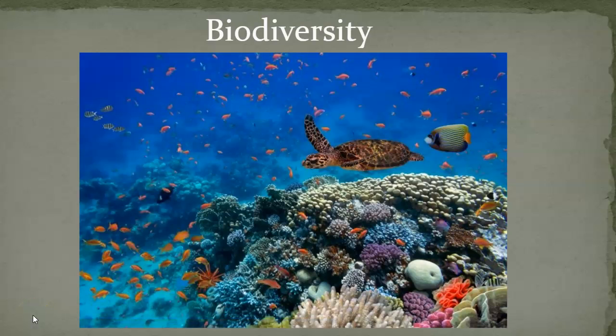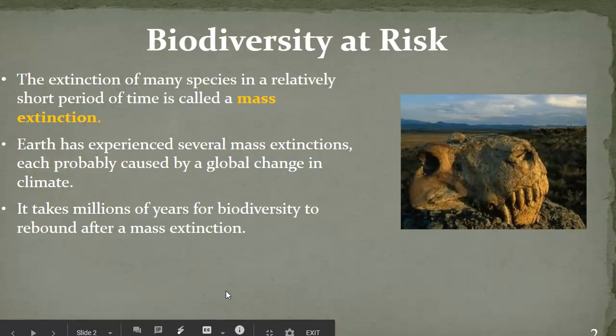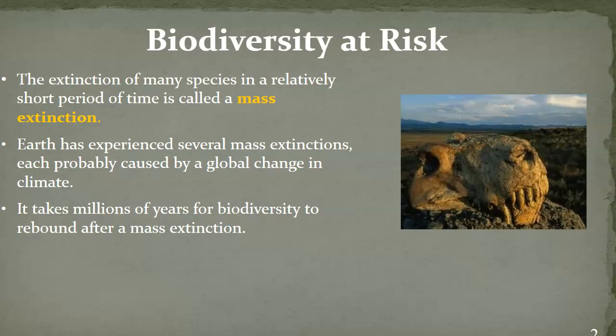Hi guys, I'm going to be talking you through part two of our lecture notes on biodiversity. When we look at biodiversity, we are looking at animals that are at risk. Biodiversity is the amount of different species we have around the world. When we're looking at biodiversity at risk, we're looking at what are some of the things putting this number of species in danger. We look at the extinction of many species in a relatively short period of time, what is referred to as a mass extinction.